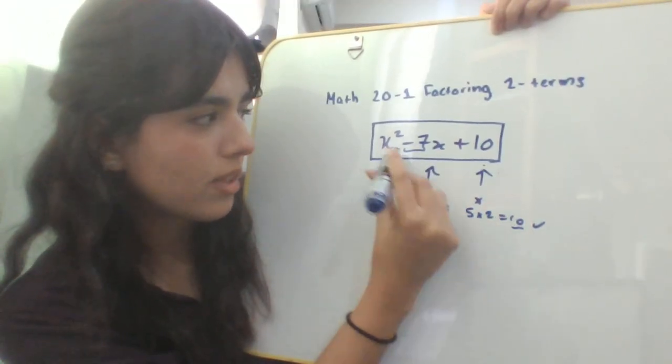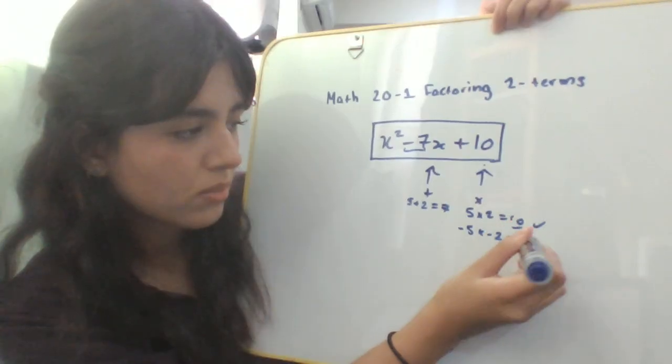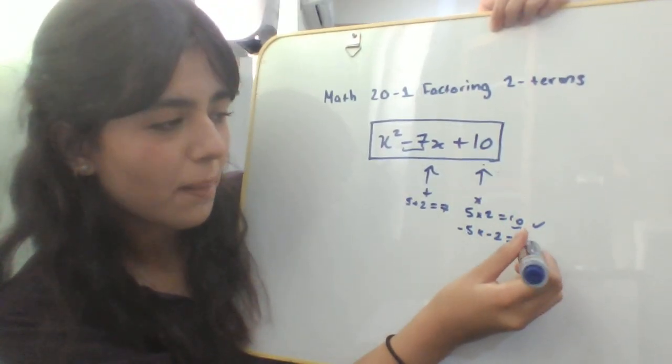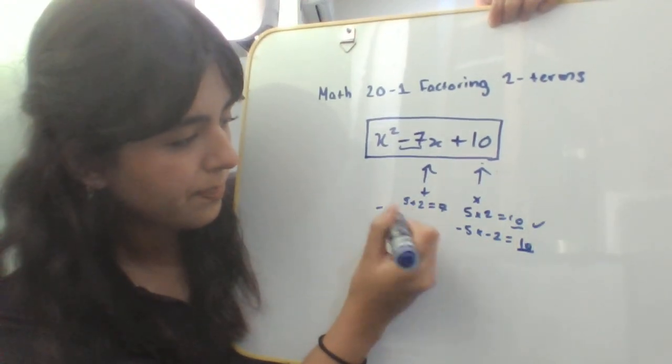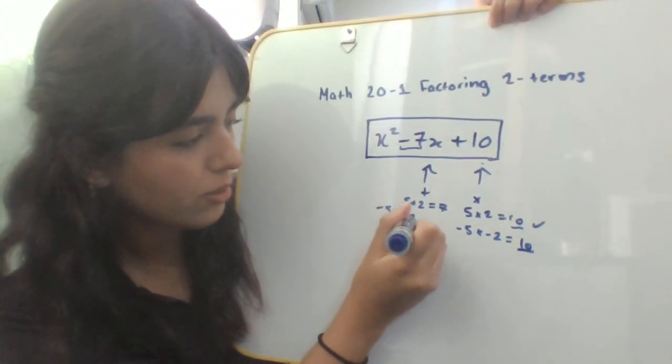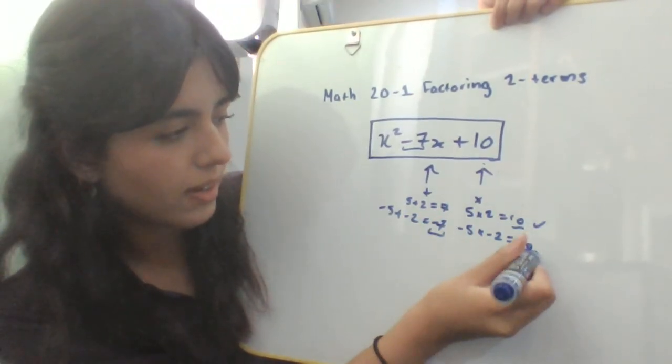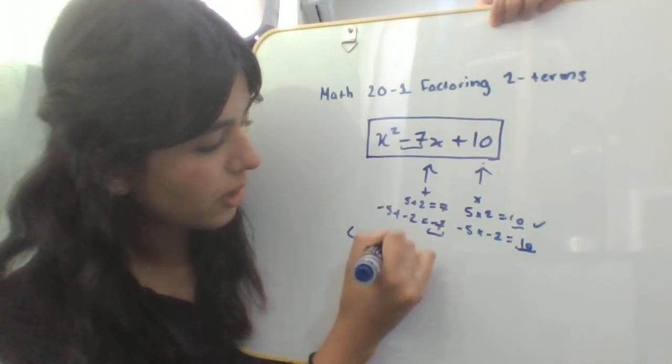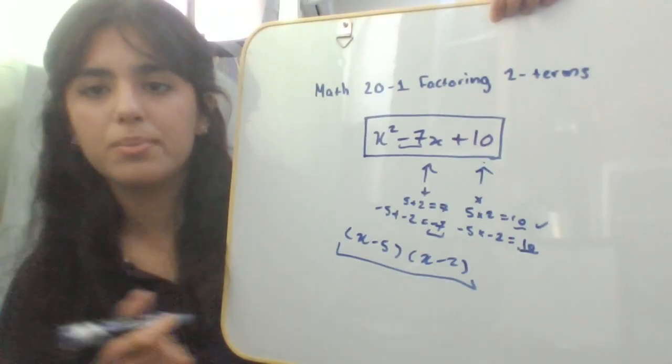One way that this could work—you want a positive 10 and a negative 7—so you could do negative 5 times negative 2, which won't change the sign; it'll just equal positive 10. After that, you can check to add them: negative 5 plus negative 2, that in fact equals negative 7. Now you'll just put it back into brackets: (x - 5)(x - 2), and that will be your final factored form.